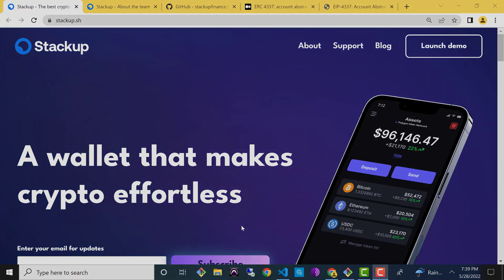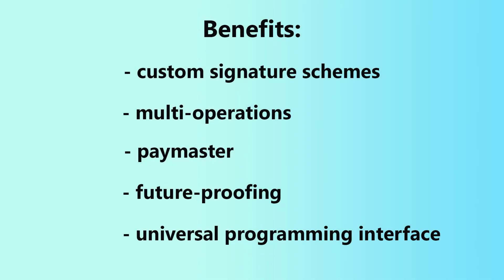Let's go over some of the benefits of account abstraction. Number one: custom signature schemes. EOAs are locked into using the elliptical curve digital signature algorithm. It's incredibly secure, but with smart contract wallets, you can use whatever signature scheme you can conceive of and code in Solidity. This may include more efficient, simple, or more secure signature schemes, such as multi-sig, social recovery wallets, or quantum-resistant signature schemes.